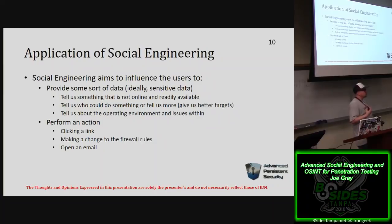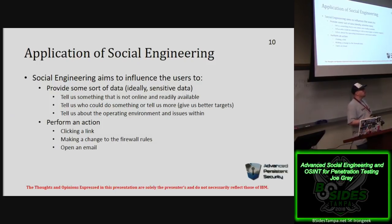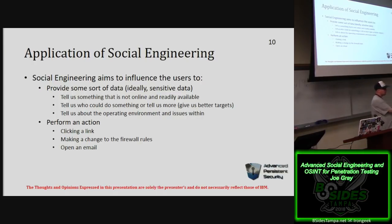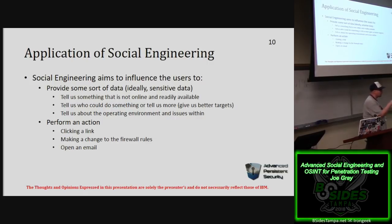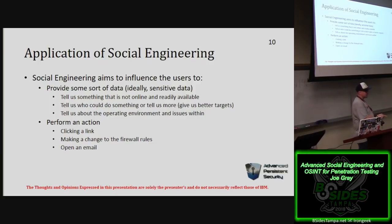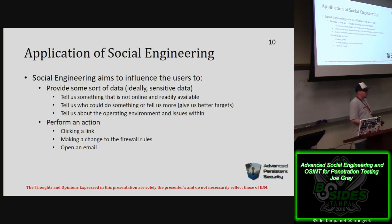Social engineering boils down to two things: you either want people to tell you something or do something. For example, instead of asking for their mother's maiden name directly, ask 'What was your mom's name before she was married?' — and you've gotten the answer to a security question without triggering suspicion. I also stay sharp by walking up to random people at conferences and using elicitation techniques to get them talking.